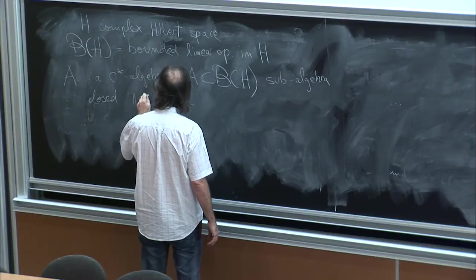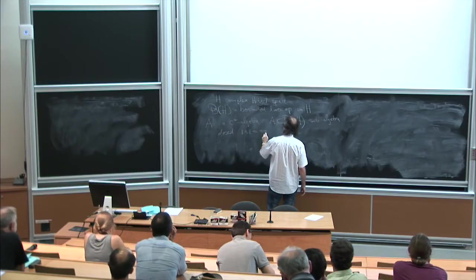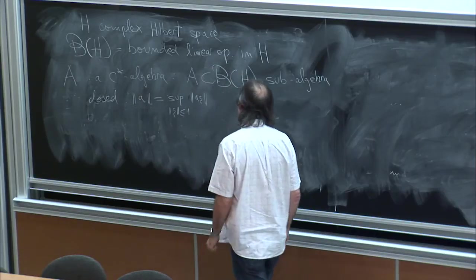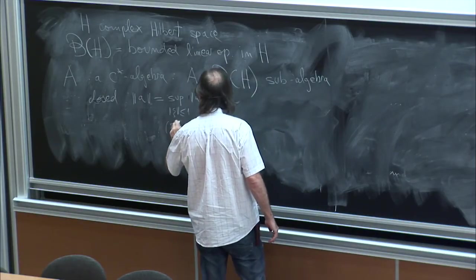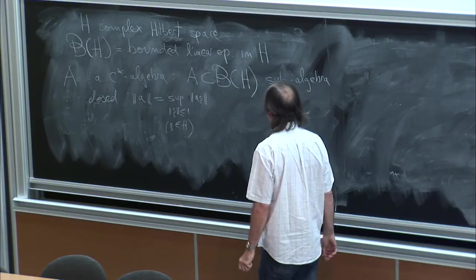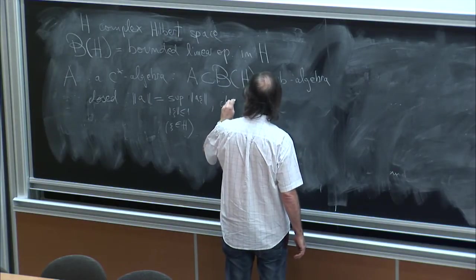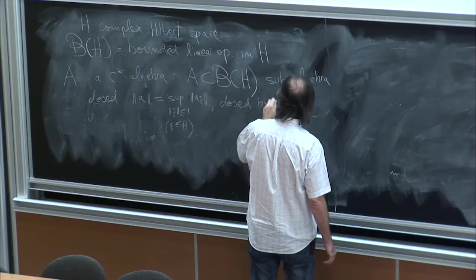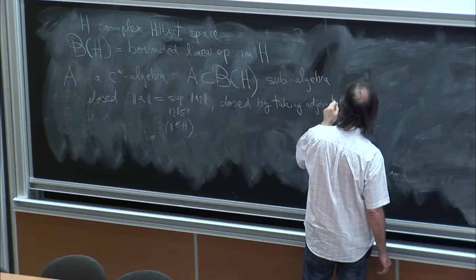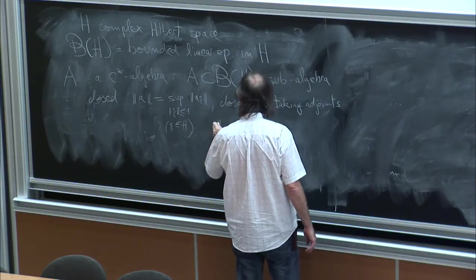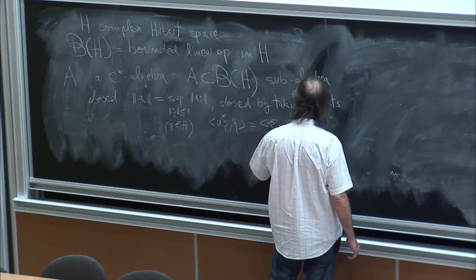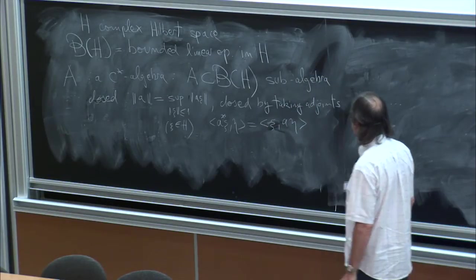with the usual norm of operators. The norm of an operator is the supremum of its values in the ball, closed in norm and also closed by taking adjoints. The adjoint of an operator, as usual, is defined by this duality.